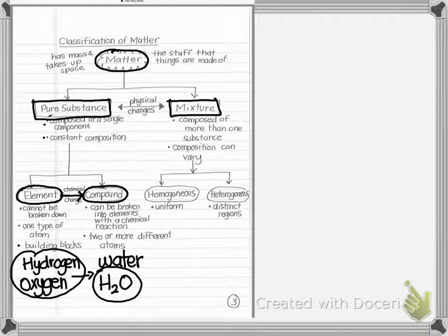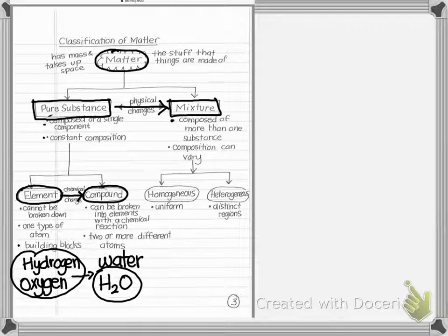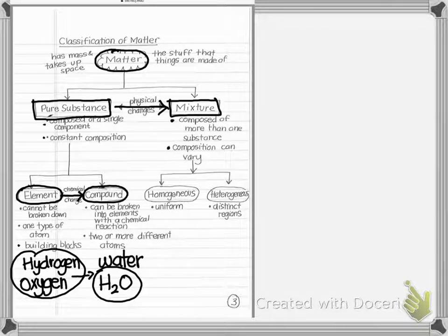Mixtures, on the other hand, are composed of more than one substance and their composition can vary — you can add different amounts. For example, if you're adding sugar to tea, there's no specific amount you have to add; you'd have a varying composition of sweet tea. Another thing about mixtures is you can separate them back out using physical changes to return them to their pure substances.